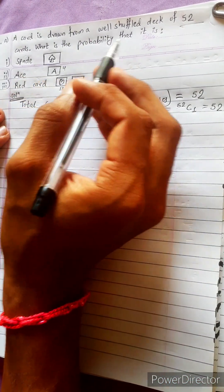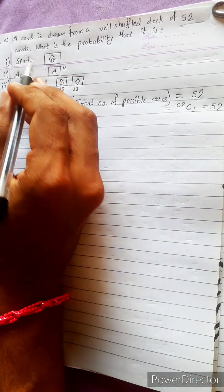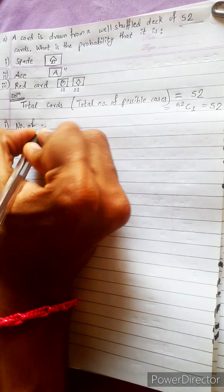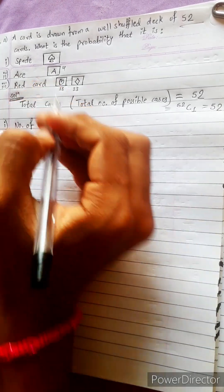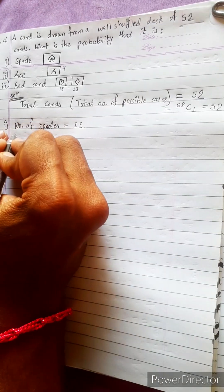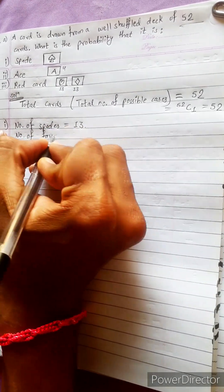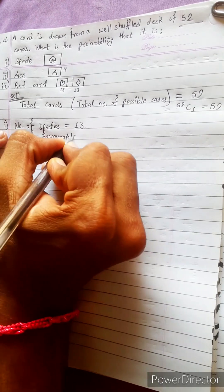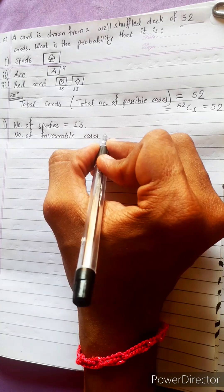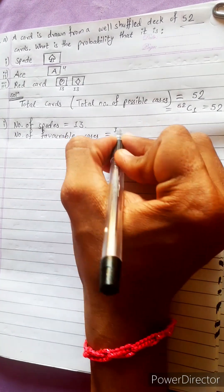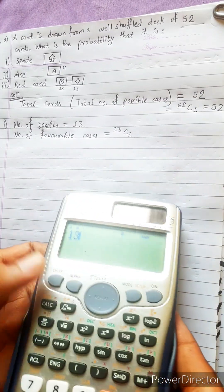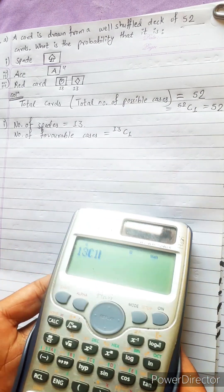What is the probability that it is a spade? You have to count the number of spades. We will use the favorable case: 13C1. 13C1 equals 13.